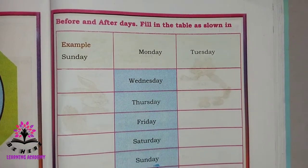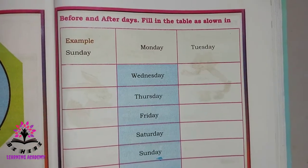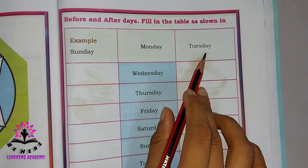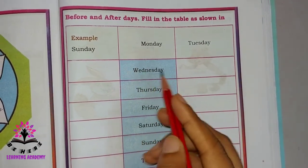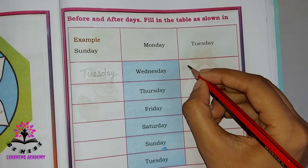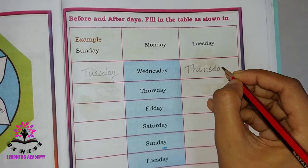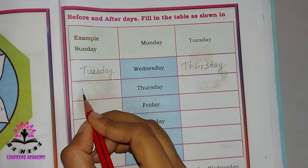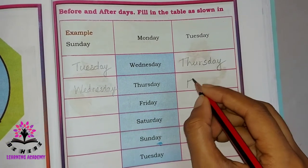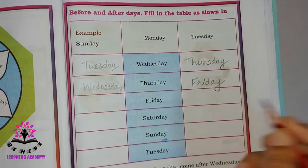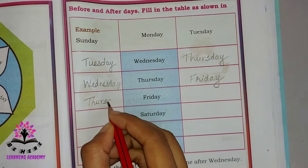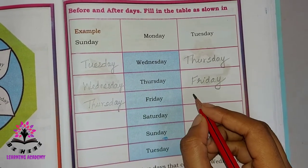Before and after days — fill in the table as shown. For Monday, the day before is Sunday and the day after is Tuesday. For Wednesday, the day before is Tuesday and the day after is Thursday. For Thursday, the day before is Wednesday and the day after is Friday. For Friday, the day before is Thursday and the day after is Saturday.